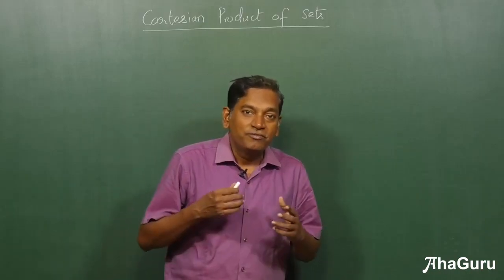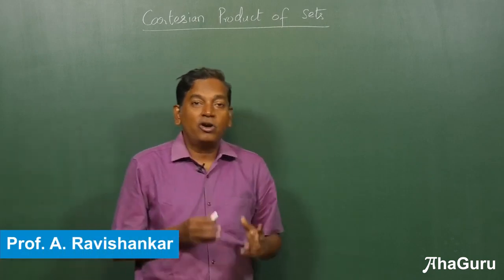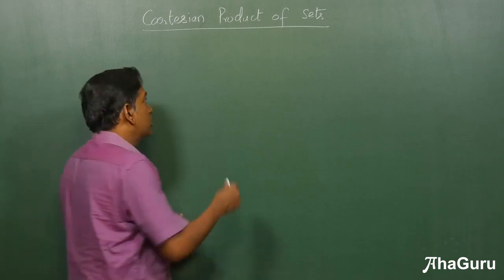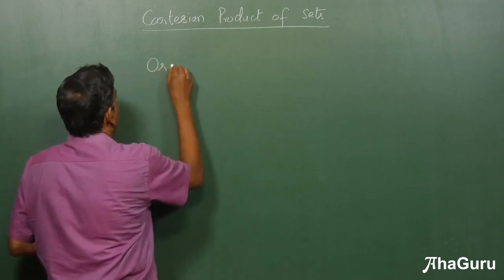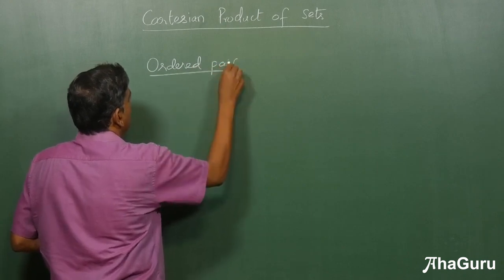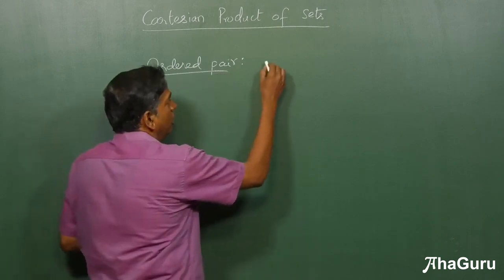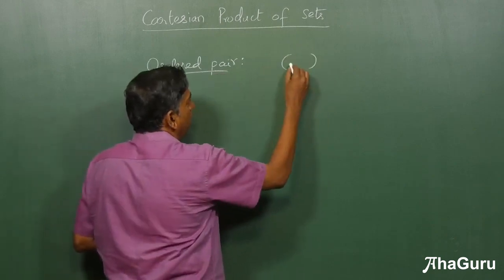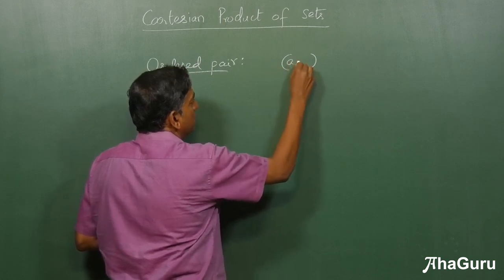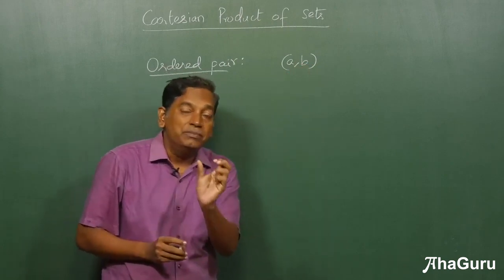In this concept, we are going to learn about a new idea called Cartesian product of sets. In order to do that, we need to define one more term which is called an ordered pair. It's a very easy idea. An ordered pair is a pair of elements denoted using round brackets, for example, a comma b. This is treated as an element of a set.